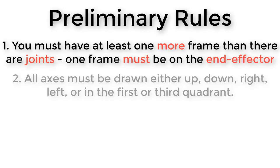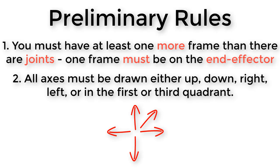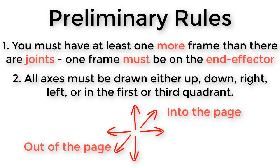The second preliminary rule has to do with how we draw axes so that another person can understand what we are drawing. There are exactly six ways we can draw an axis: up, down, right, left, diagonally in the first quadrant, and diagonally in the third quadrant. When we draw the axis in the first quadrant, it means the axis is going into the page. When drawn in the third quadrant, it means the axis is coming out of the page. We can never draw axes in the second or fourth quadrants because it is not clear which direction they are going.